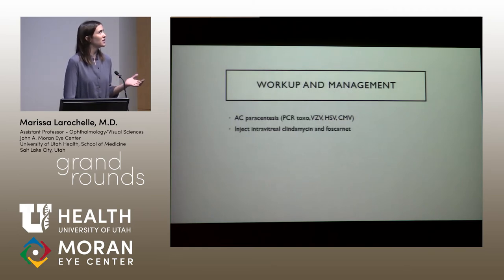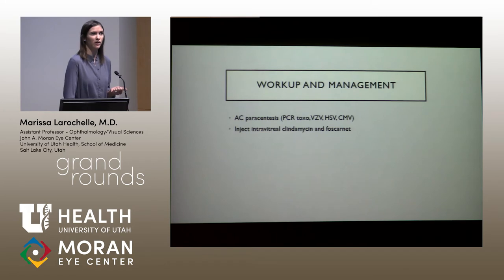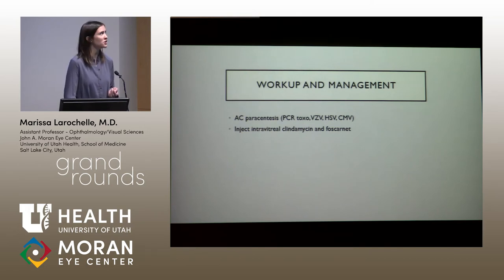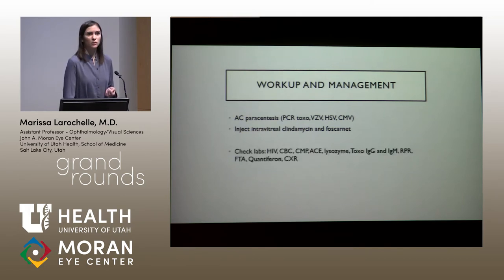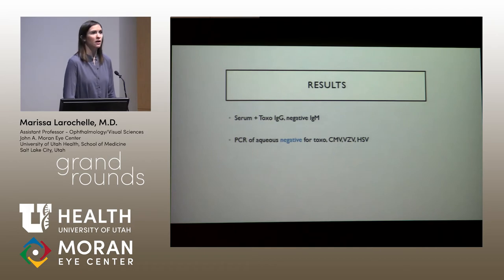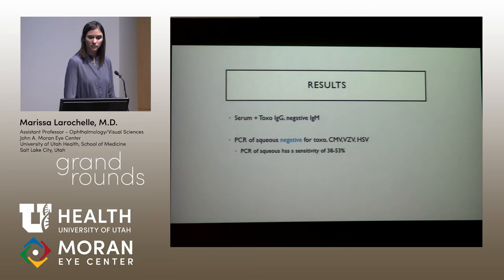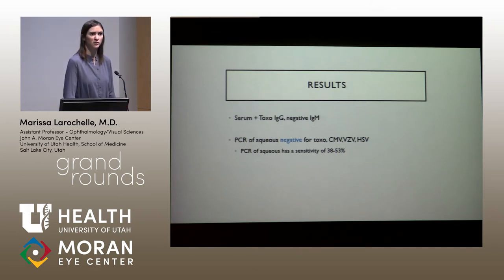The patient was young with good vision and unknown immune status. He received an AC tap checking for viral PCR, and received intravitreal clindamycin to cover toxo and foscarnet to cover viral etiologies. Labs were checked; he was started on Valtrex and Bactrim. A couple of days later, the serum toxo IgG was positive with a negative IgM. The PCR was negative for all etiologies checked; however, the sensitivity of PCR for toxoplasmosis on aqueous sample is under 50%. With retinal whitening adjacent to a pigmented scar — the buzzwords for ocular toxoplasmosis — he was treated as presumed ocular toxoplasmosis.